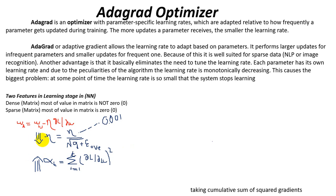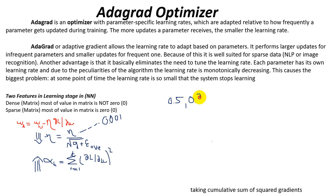The learning rates are adaptive relative to how frequently a parameter gets updated during training. The more updates a parameter receives, the smaller its learning rate becomes. Once it is updated, the value of the learning rate will be smaller.